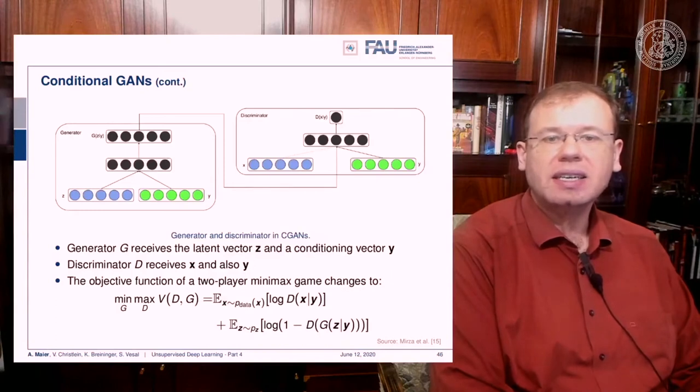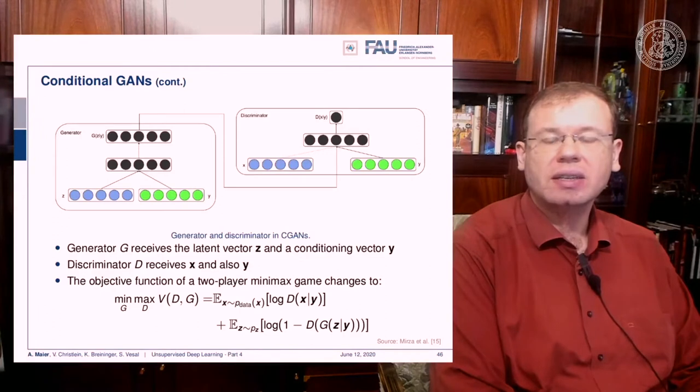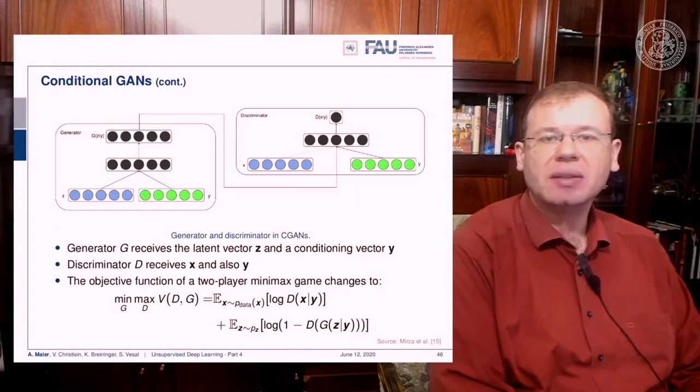The idea here is that you essentially split up your latent vector into z, which has the observation, and then you also have the condition encoded in the conditioning vector y. You concatenate the two and use them to generate something. The discriminator then gets the generated image and also gets access to the conditional vector y, so it knows what it's supposed to see.